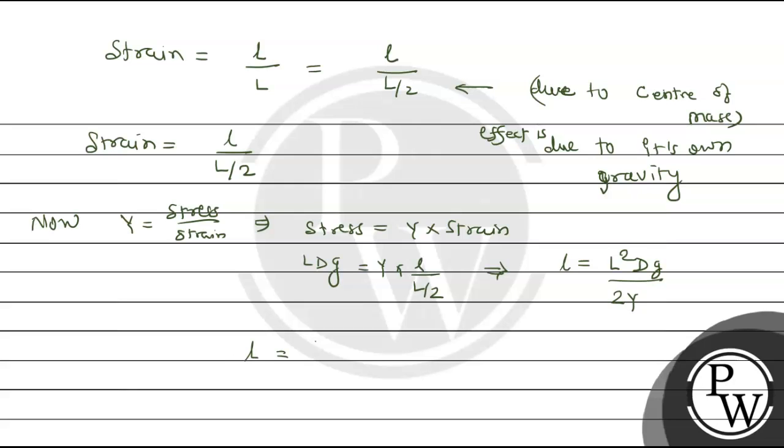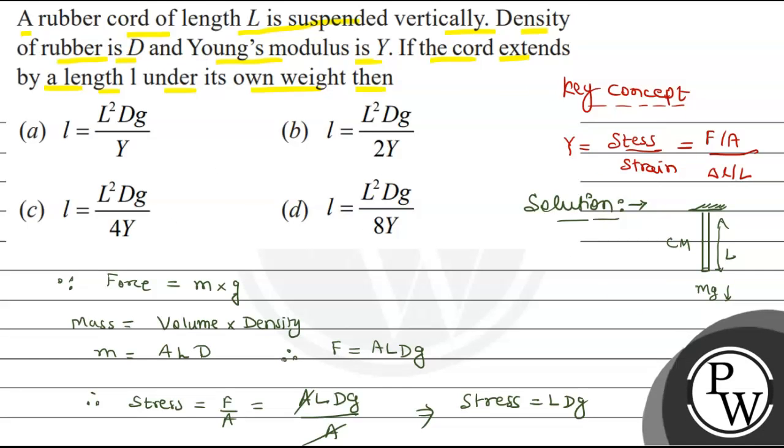The value of l is L square D G upon 2Y. Let's look at which option is correct. l equals L D G upon 2Y, so option B is the right option. I hope you understood it well. Best of luck, thank you.